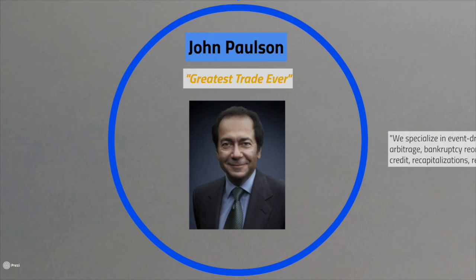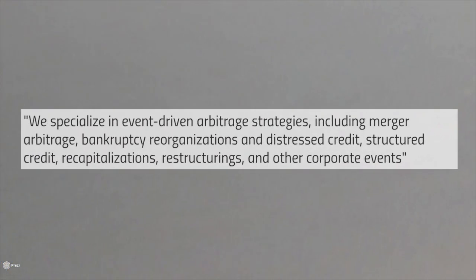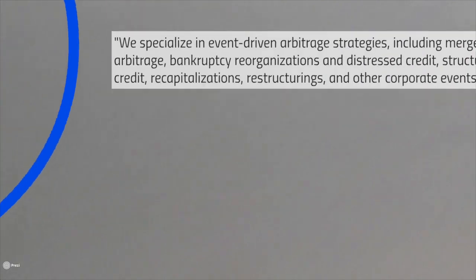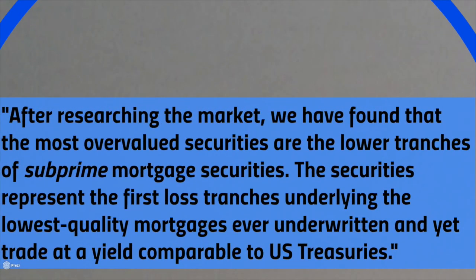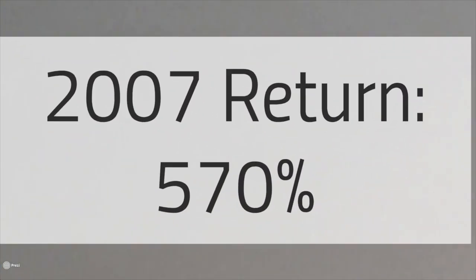Our third icon is John Paulson, the man known for putting on the greatest trade ever. If you look at the description of his firm, you might ask yourself — hey, I have no idea what this means, this all looks like gibberish to me. But believe me, this stuff is applicable to everyone and can be easily accomplished. If we take a look at a quote he had in 2006, in 2006 he realized that subprime mortgages were trading at comparable yields to U.S. Treasuries, yet they should have been treated as junk bonds. This is what he saw as the ultimate arbitrage opportunity, for which he made billions in 2007 — a 570% return in his fund. There are thousands of these opportunities that pop up a year: mispricings, arbitrage, and event-driven scenarios. But you don't have to be a hedge fund billionaire to take advantage of it, which we'll go over in a few minutes.